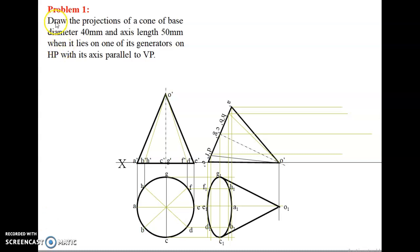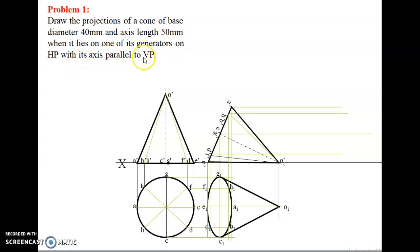Problem number one: draw the projections of a cone of base diameter 40 mm and axis length 50 mm when it lies on one of its generators on HP with its axis parallel to VP. A cone has two generators, and it is lying on one of its generators on HP with its axis parallel to VP.